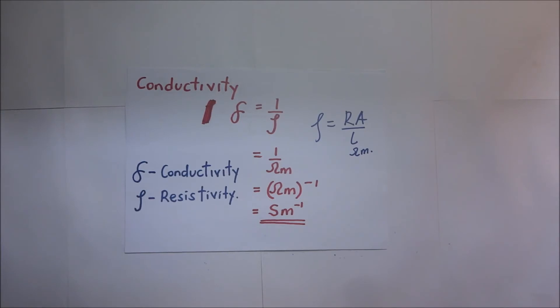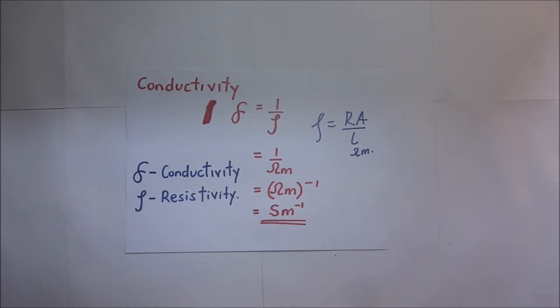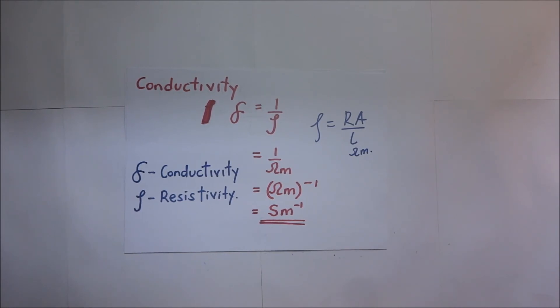To conclude, if a metal has a 60 percent resistance, it means that its conductance is 40 percent. Likewise, if a metal has a 90 percent resistivity, it means that its conductivity is 10 percent. One thing is the reverse of the other.